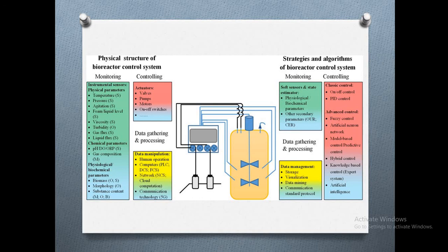The strategies and algorithms of a bioreactor control system include monitoring via soft sensors and state estimators for physiological and biochemical parameters. Classic controls used are on-off control and PID control. Advanced controls include fuzzy control, artificial neural networks, model-based control, predictive control, hybrid control, knowledge-based control, and artificial intelligence. Data gathering and processing can also be stored through data management including storage, visualization, data mining, and communication standard protocols.